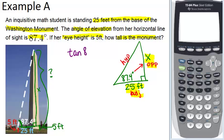So our equation is going to be tangent of 87.4 degrees equals X, which is opposite, over 25, which is adjacent. Now we're going to use our calculator to do tangent 87.4 degrees.